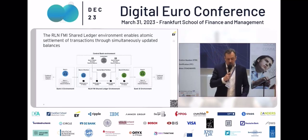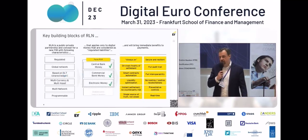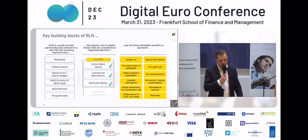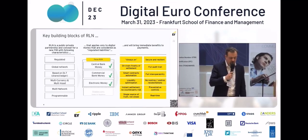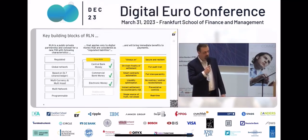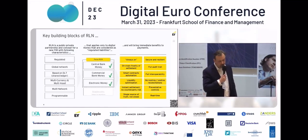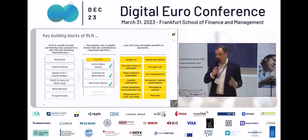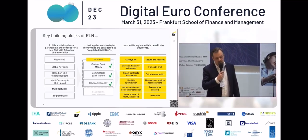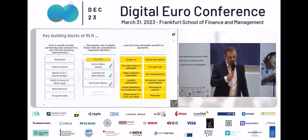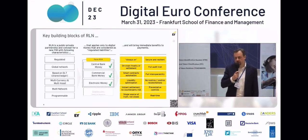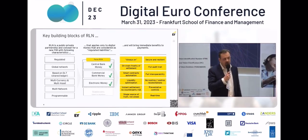There are a couple of key building blocks described in the paper. The whole idea is for it to become a public-private partnership, bringing both worlds together to form a regulated network. It should be a global network, based on DLT, multi-currency, multi-asset, multi-network, and it should support programmability. What would such a network bring us? It would always be on — 24/7 settlement — secure and resilient, with a full audit trail, on-chain finality of settlement, liquidity optimization so we don't have different silos, and real-time single source of truth.